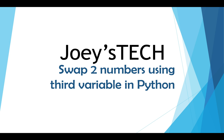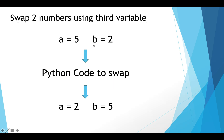Let's first understand what this program is all about. We have two variables A and B — A holds 5 and B holds 2. These two variables are given as input to a Python code to swap them, as a result of which A now holds 2 (the original value of B) and B now holds 5 (the original value of A). So the values have been swapped.